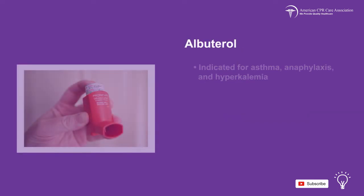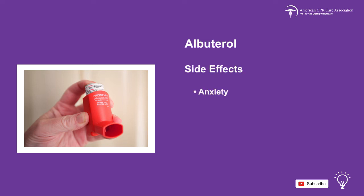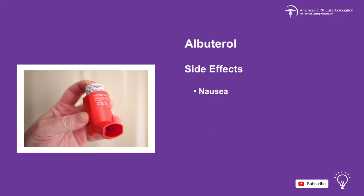Albuterol is indicated for asthma, anaphylaxis, and hyperkalemia. Side effects are anxiety, headaches, coughing, difficulty breathing, palpitations, tachycardia, high or low blood pressure, heartburn, nausea, diarrhea, and reddening of the skin.